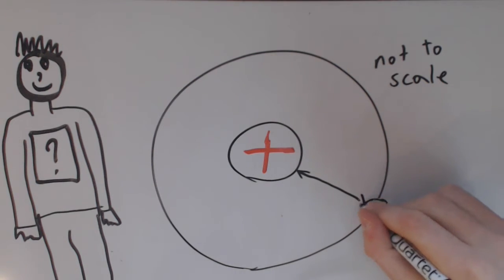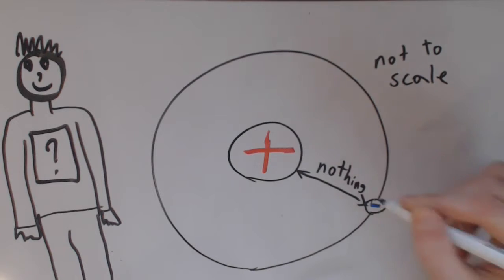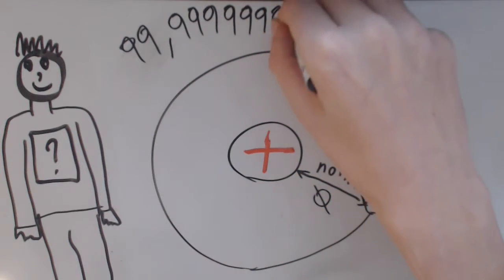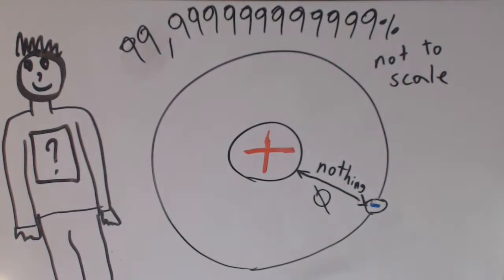Between the electrons and the nucleus is nothing. Well, absolutely nothing. It's a vacuum. It's empty space. This emptiness actually is a giant part of the atom. It's 99.999999999999% of the atom.